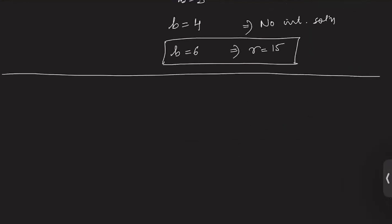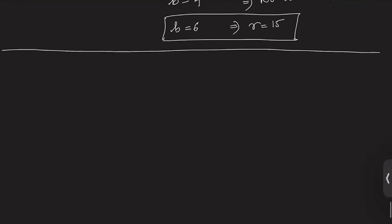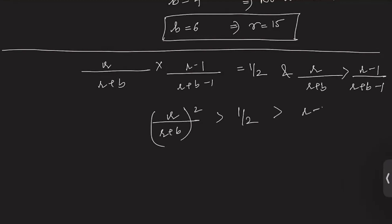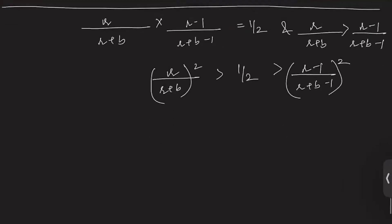Now there is another method given in the book which we will also discuss. For that method, we note that r/(r+b) × (r−1)/(r+b−1) = 1/2. According to number theory, r/(r+b) is greater than (r−1)/(r+b−1). Taking the square root of one-half and using these two inequalities, we get: r/(r+b) > 1/√2 > (r−1)/(r+b−1).